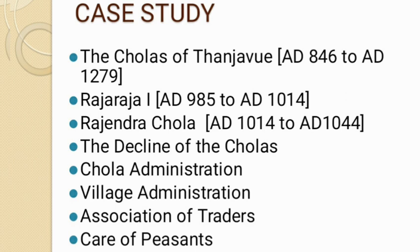The smallest unit of administration was the village. The villagers had independence in running administration, and every village had an assembly called Ur. The general assembly of the village was called Ur, and its members were elected by the villagers themselves. Members were educated, landowners, and experts in administration. Selection was done by making a list of all names, putting them in a pot, and having young boys draw slips; the village priest declared the result. The assembly collected taxes for water supply, lakes, temples, and schools, and also resolved disputes among villagers.